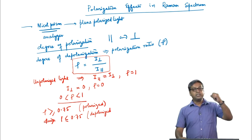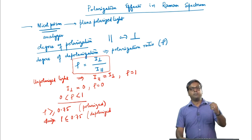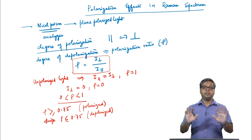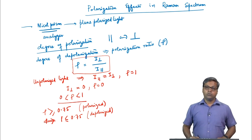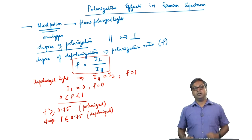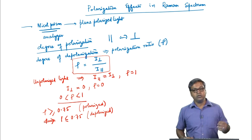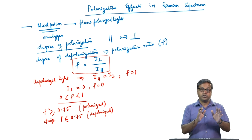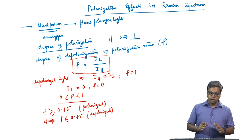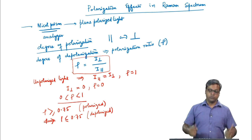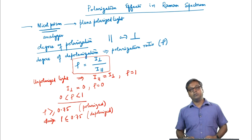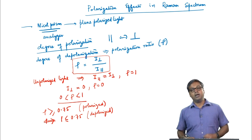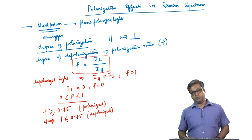Only symmetric vibrations give rise to polarized lines. By measuring the depolarization ratio, we can distinguish between symmetric vibrational modes and other modes, such as bending modes or asymmetric vibrational modes.